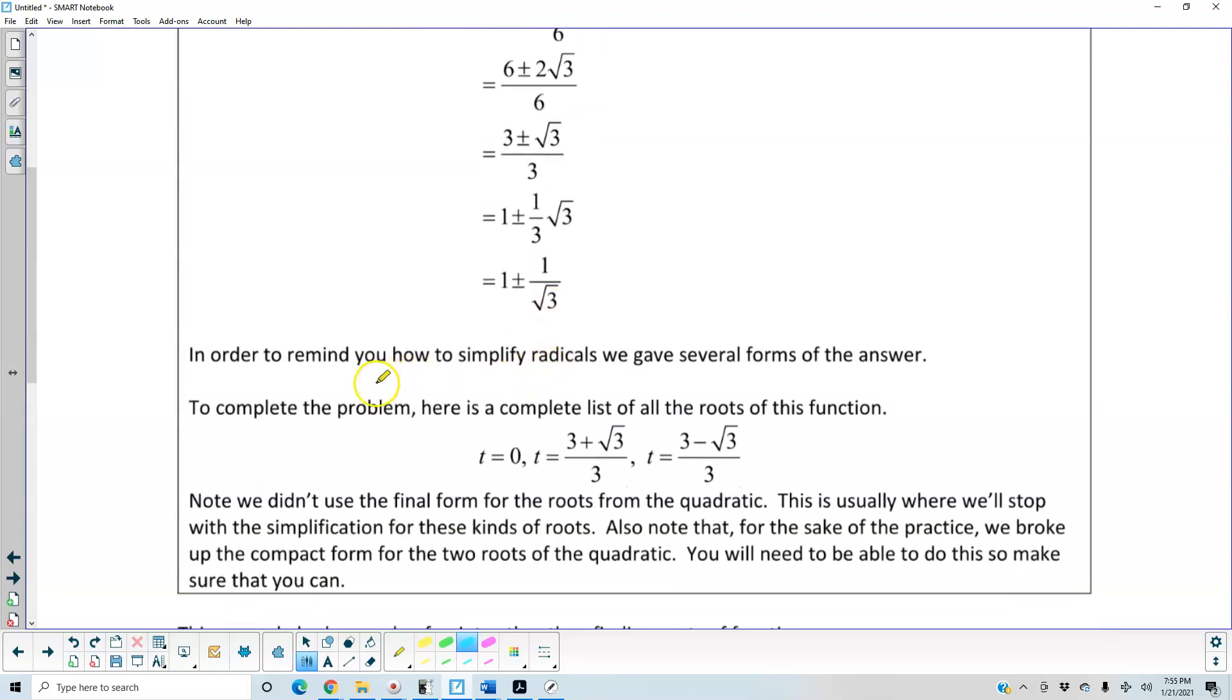Now in order to remind you how to simplify radicals, we gave several forms of the answer. To complete the problem, here's a complete list of all the roots of this function: t = 0, t = (3 + √3)/3, and t = (3 - √3)/3.